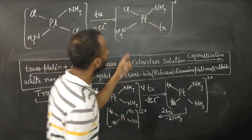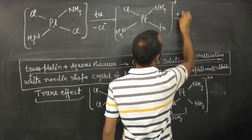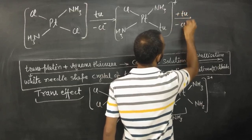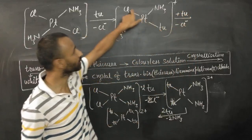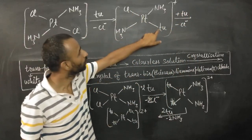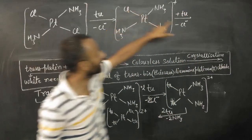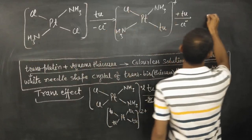Now when it is removed, again one thiourea can be added. Because now, trans effect of thiourea is greater than chlorine. So this chlorine is replaced by again thiourea. So we get